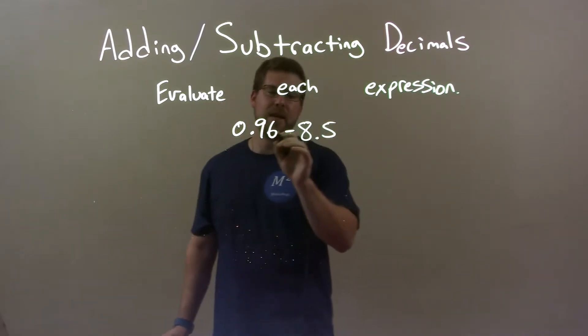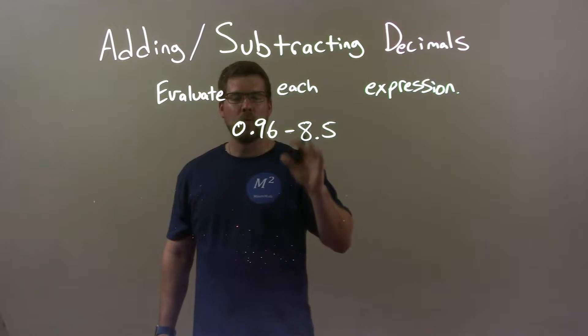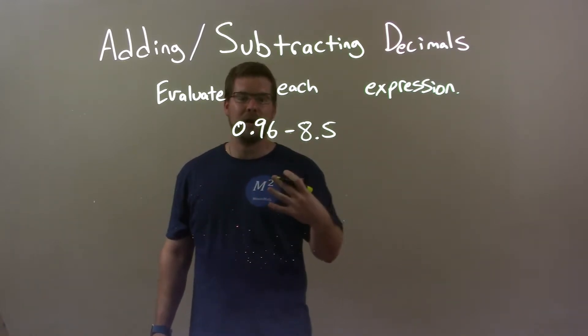When we have something like this and it can't just easily be subtracted, what we need to do is find the difference between these two numbers and then put on a negative.